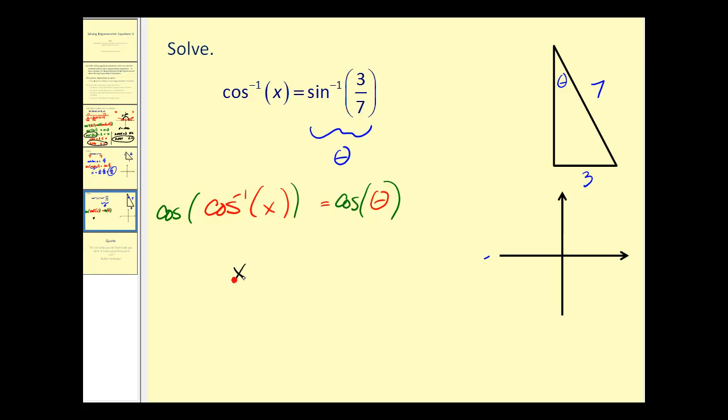And remember if we take the cosine of inverse cosine x, we will just have x left. So we have x equals cosine θ. Well, over here we've modeled angle θ, so if we can find the cosine of this angle we can find the value of x.